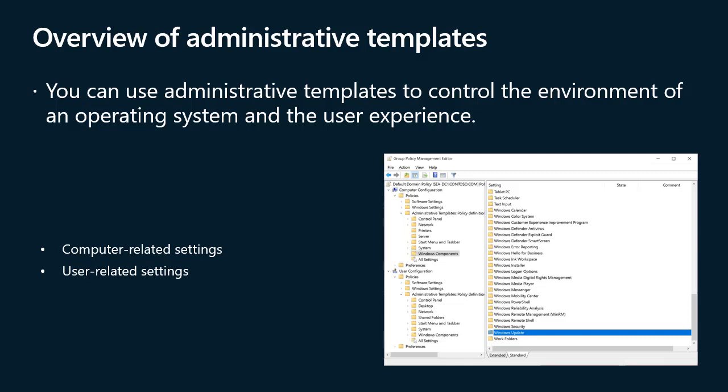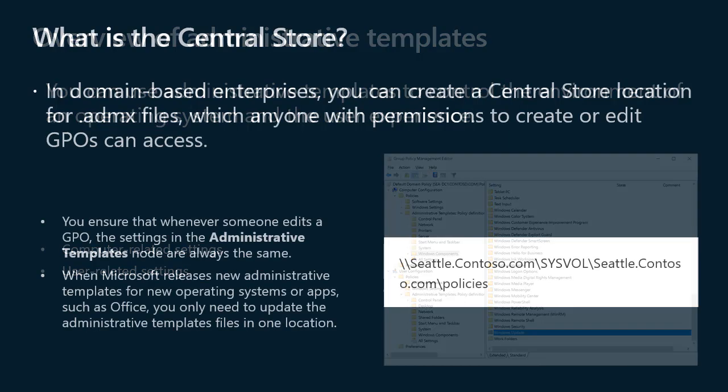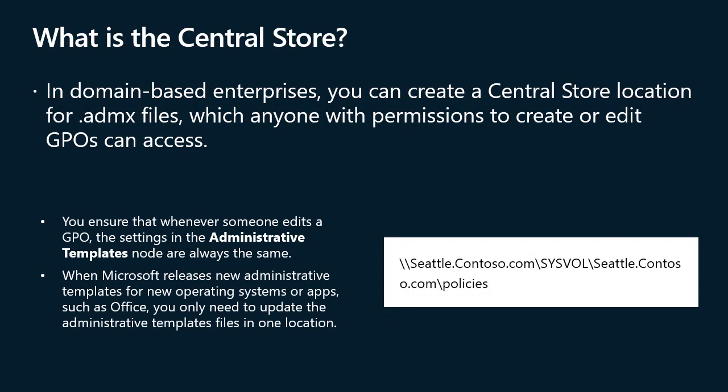By default, only the ADML language files for the language of the installed operating system are present. In domain-based enterprises, you can create a central store location for ADMX files, which anyone with permissions to create or edit GPOs can access. The Group Policy Management Editor automatically reads and displays administrative templates policy settings from ADMX files in the central store, and then ignores the ADMX files stored locally. If the domain controller or central store is not available, the Group Policy Management Editor uses the local store. The advantages of creating a central store are: you ensure that whenever someone edits a GPO the settings in the Administrative Templates node are always the same; and when Microsoft releases new administrative templates, you only need to update the files in one location. You must create and update the central store manually on a domain controller, and domain controllers use ADDS replication and DFSR to replicate the data.